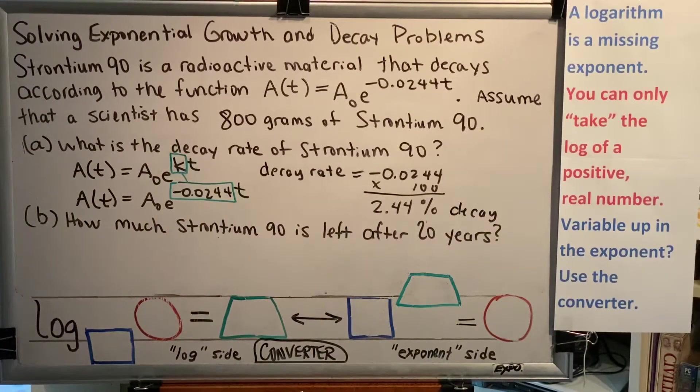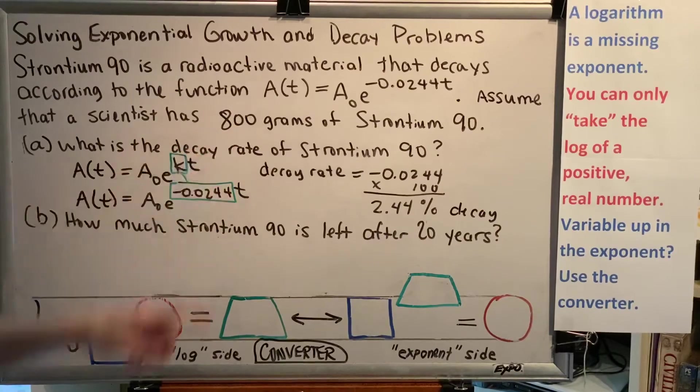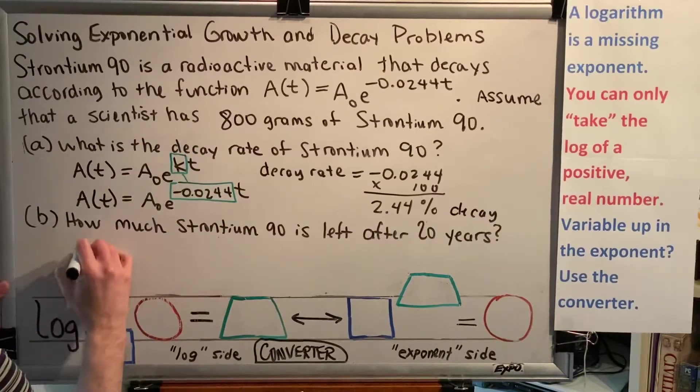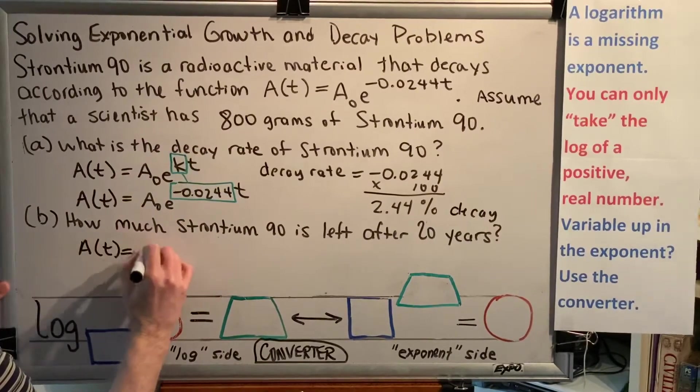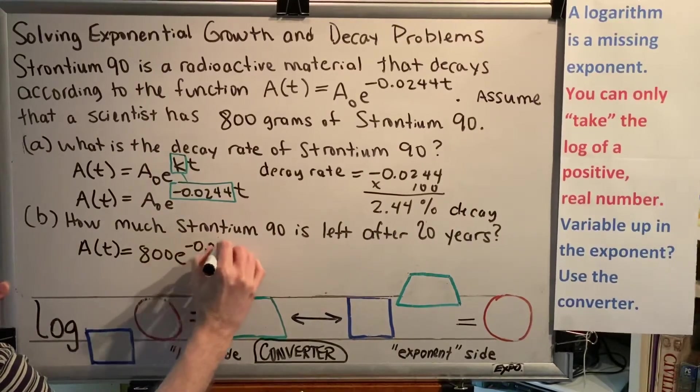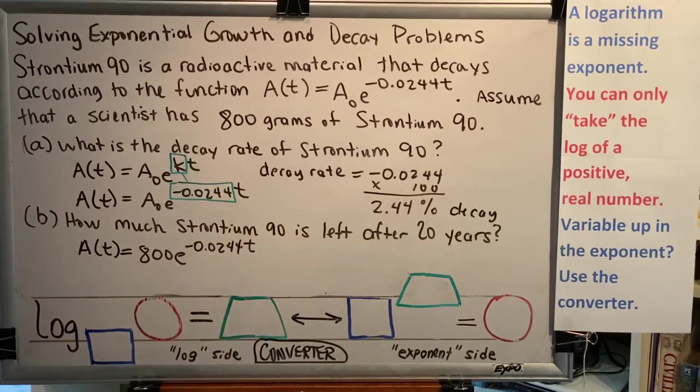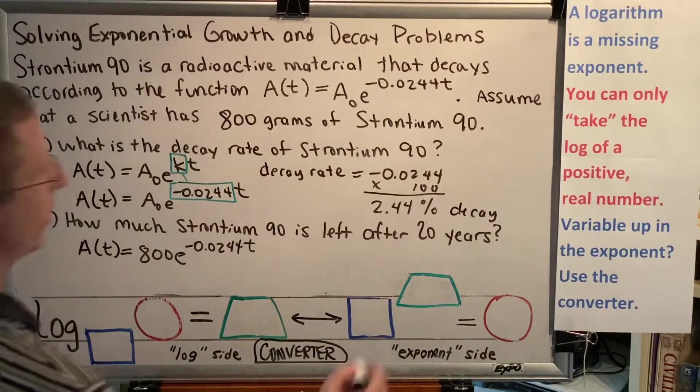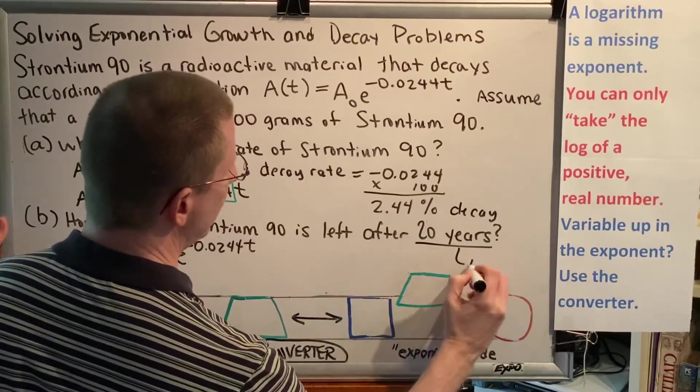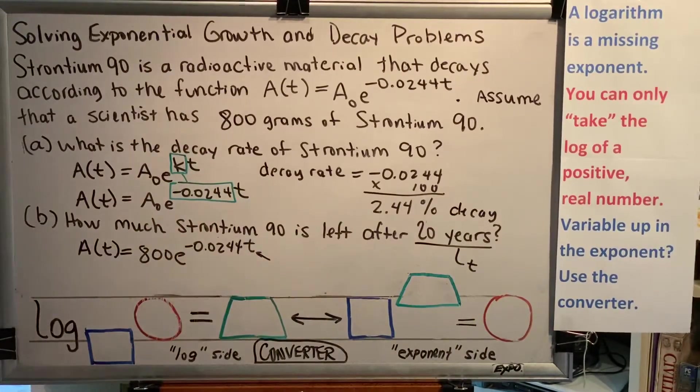Part B: How much Strontium-90 is left after 20 years? Well, this is actually a very easy question to answer. We know that A₀, the starting amount, is 800 grams. So our equation is A(t) = 800e^(-0.0244t). So if we want to know how much Strontium-90 is left after 20 years, we just have to take this value of time t, which is 20, and put it in here in our equation.